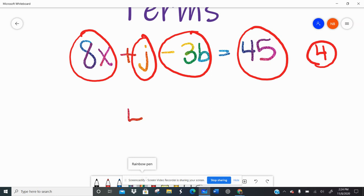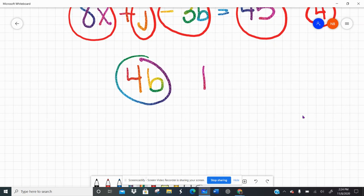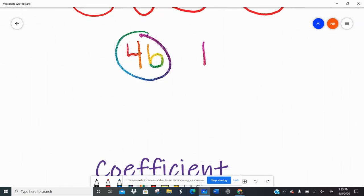If I have 4b, and that's it, that's one term, right? 4b is the expression, but there's one term. Even though there's two pieces to that, they're being multiplied together, so they're kind of like one unit. That is a single number, right? One term.